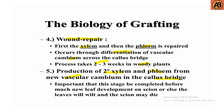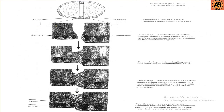The fifth stage is the production of secondary xylem and phloem from the new vascular cambium in the callus bridge. It is important that this stage be completed before much new leaf development occurs on the scion, or else the leaves will wilt and the scion may die.